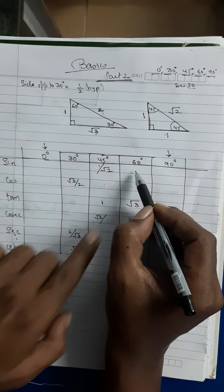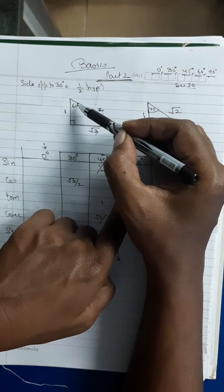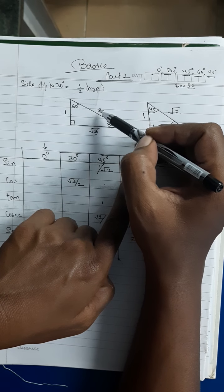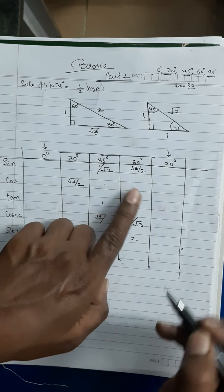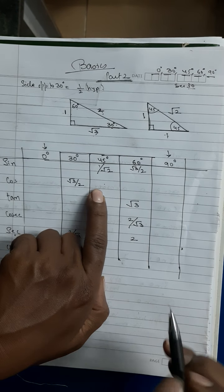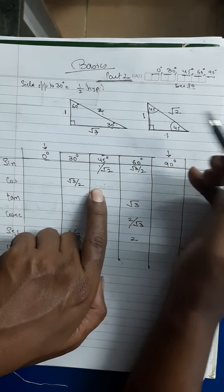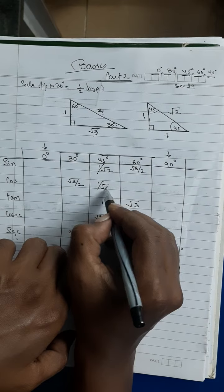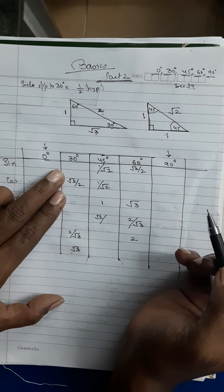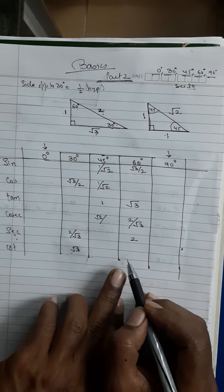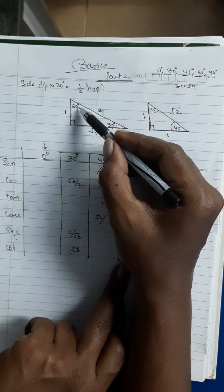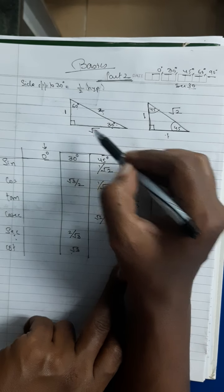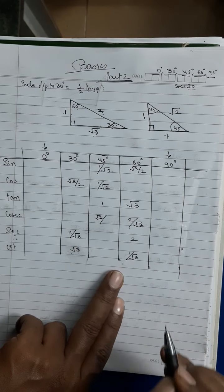Sin 60: sin is opposite side upon hypotenuse. For 60°, opposite = √3, hypotenuse = 2, so sin 60 = √3/2. Cos 45: cos is adjacent upon hypotenuse = 1/√2. Cot 60: cot is adjacent upon opposite = 1/√3.